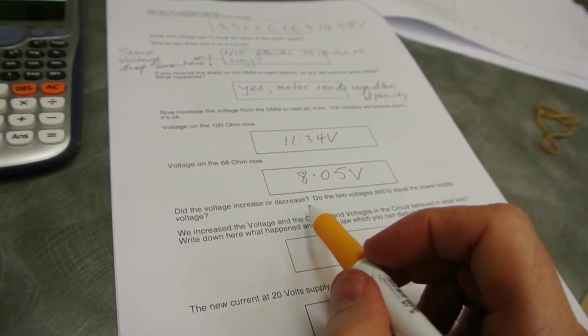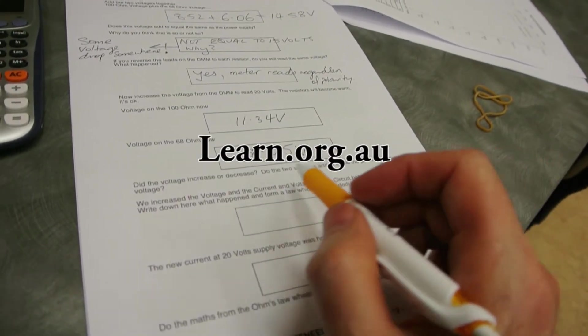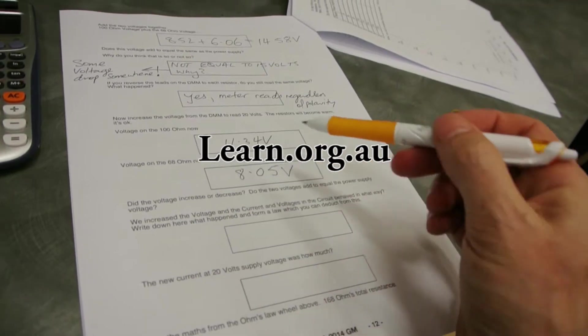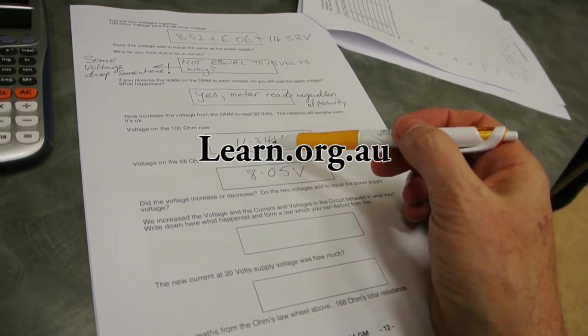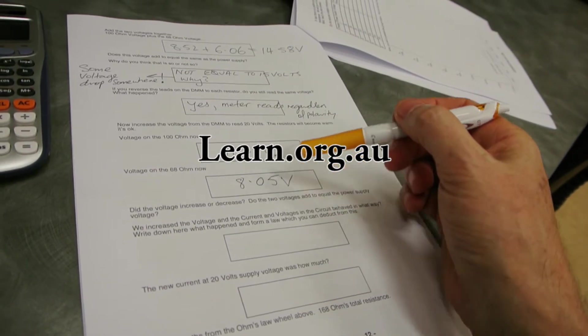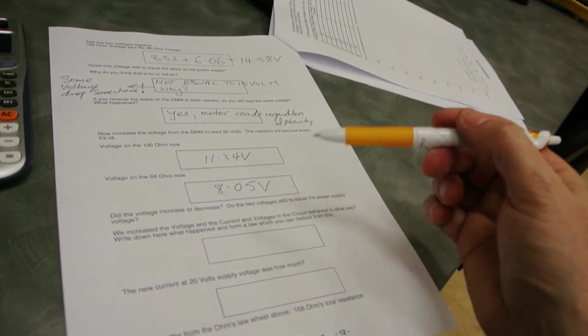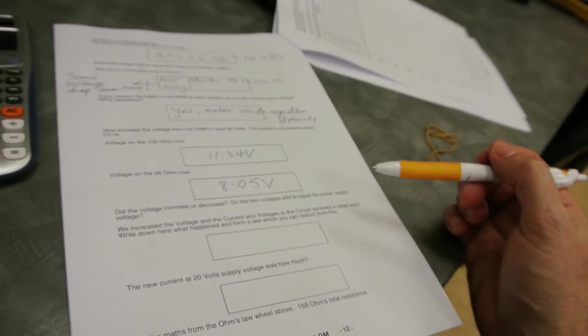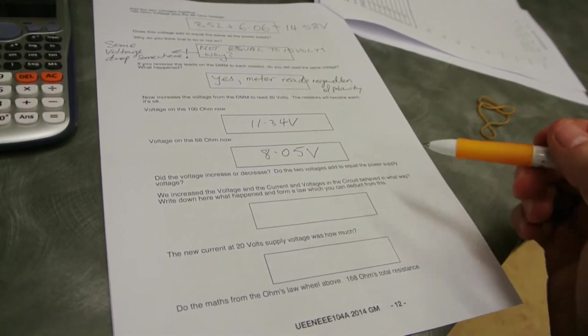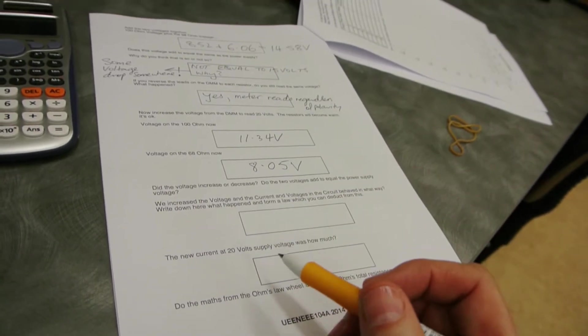Did the voltage increase or decrease? Did the two voltages add to equal the power supply voltage? Certainly the voltages are larger. The voltage across each resistor has increased, quite proportional to the increase in voltage that we gave the circuit.